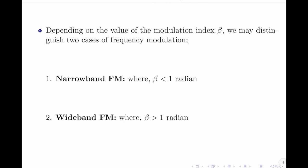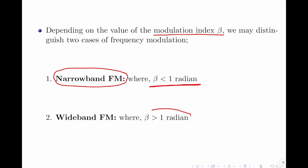Before we end this video, I want you to note that depending upon the value of the modulation index beta, frequency modulation can be distinguished into two cases. When the value of beta is less than 1 radian, the frequency modulation is called narrow band frequency modulation. On the other hand, when the modulation index beta is greater than 1 radian, we obtain wide band frequency modulation. In my next video, I will be discussing narrow band frequency modulation, so stay tuned.